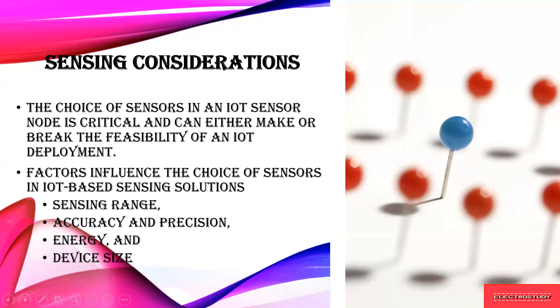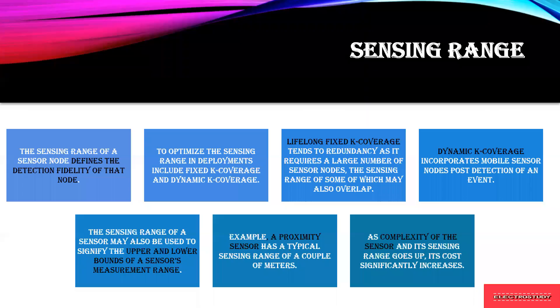The factors are: sensing range, accuracy and precision, energy, and device size. These are the four basic things you have to consider when designing a sensor for a particular application.